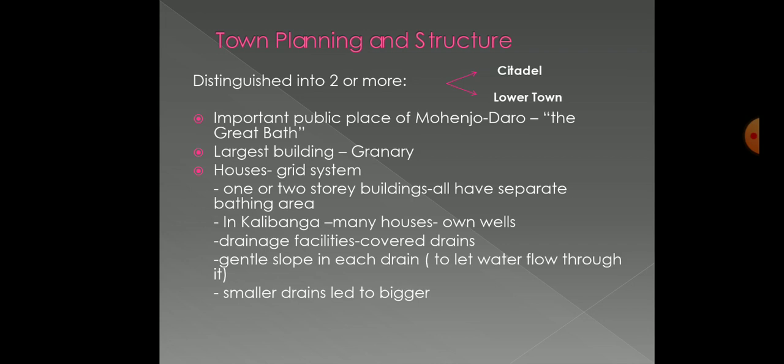Regarding houses, the arrangement is in a grid system with roads cutting one another at right angles. One or two story buildings all had separate bathing areas. All houses had proper drainage facilities. In Kalibangan, many houses had their own wells. The drainage system featured covered drains with inspection holes at regular intervals for cleaning. There was a gentle slope in each drain to let water flow, and drains from houses led into street drains, with smaller drains leading to larger ones.